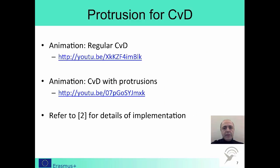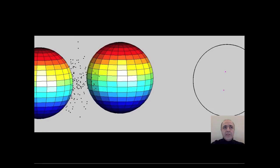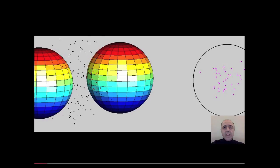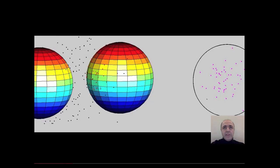Let's have a look at the animations provided by my PhD student Gaia Gench. The first video shows regular CVD when there are no protrusions. The sphere on the left is a transmitter, the sphere to the right is the receiver. At the very right end, you see a circle which represents the face of the receiver that faces towards the transmitter. The messenger molecules are released from the transmitter, and when they hit the receiver, they are shown with red dots. In the circle at the very right end, you see the number of received molecules increasing in time.